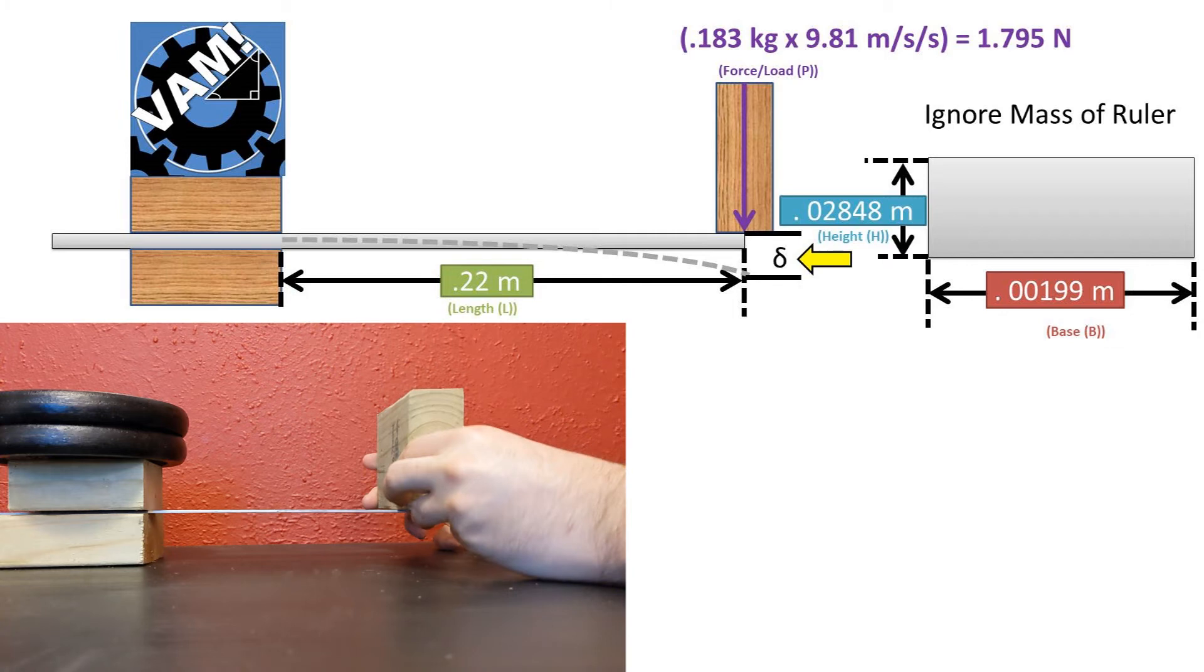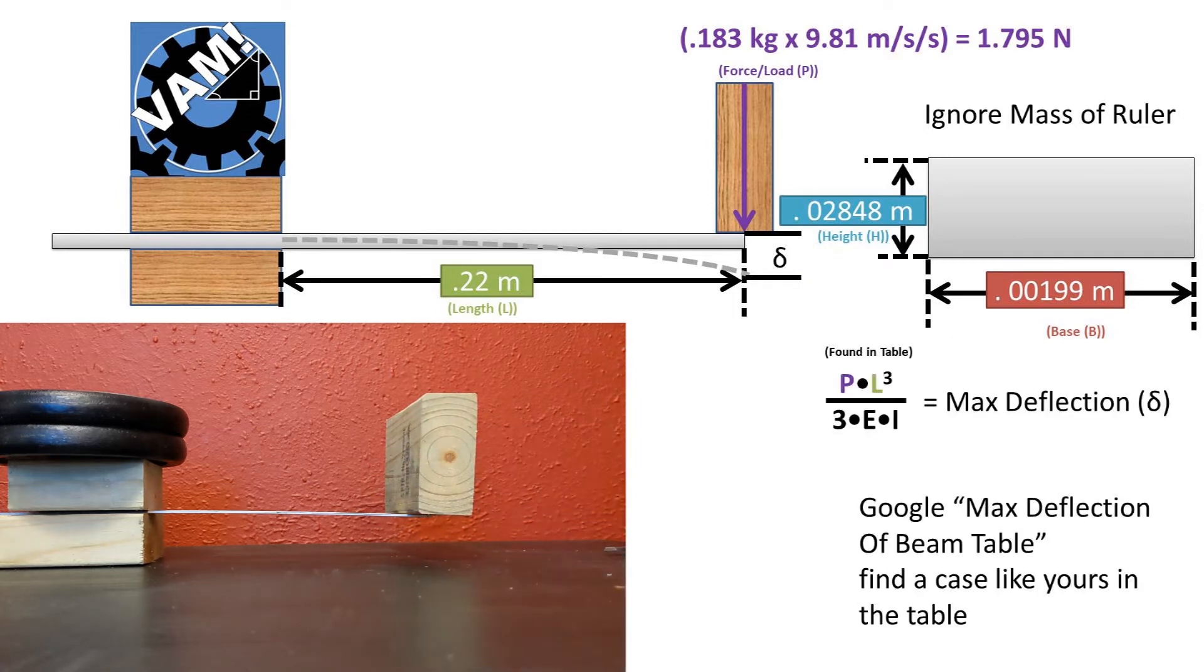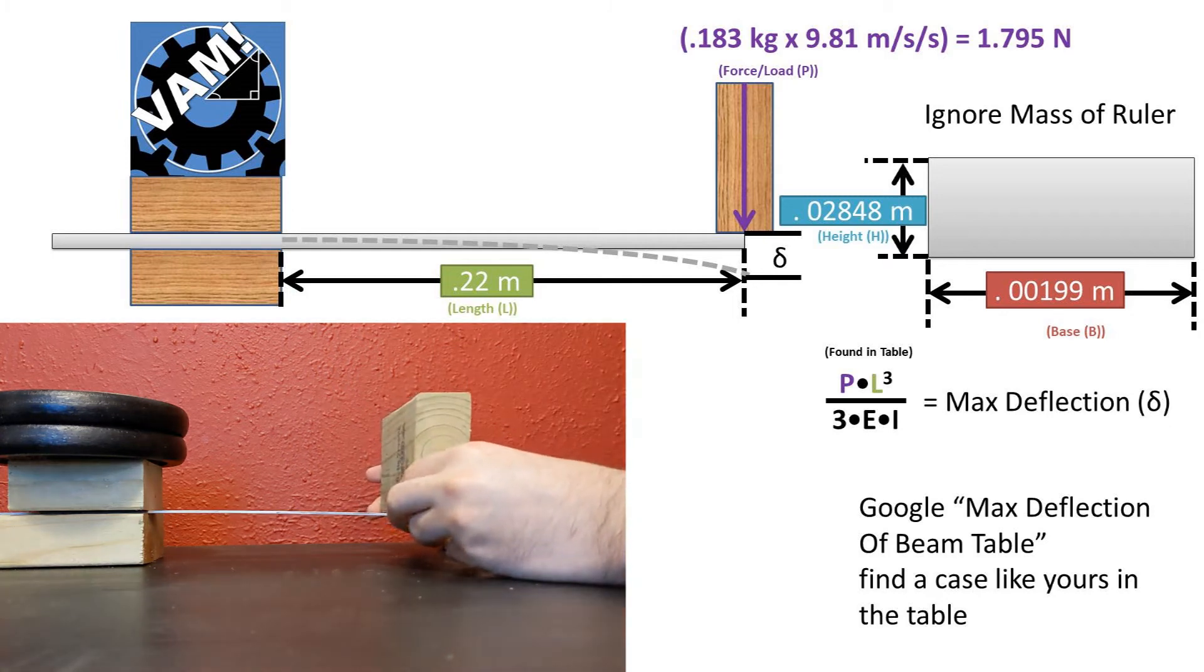We want to find the deflection of this ruler after the block is placed on it. Deflection is how much the end of the ruler moves downwards after the block is placed. To solve this problem, I'm going to look up the beam deflection case in a table. You could also use an internet search.